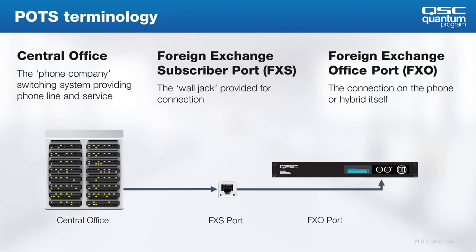Analog telephone service is hosted on what is called the central office, or CO. The central office provides the voltage, signal, and switching to connect one phone to another during a call. A phone is wired to a wall jack, typically a female connector on a wall plate. This is called the foreign exchange subscriber port, or FXS. The port on the phone — or Q-SYS in this case — is called the foreign exchange office port, or FXO.